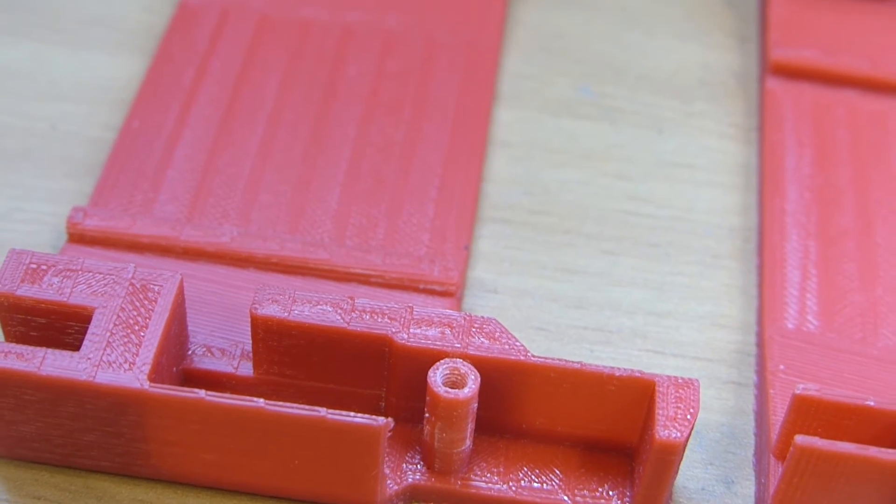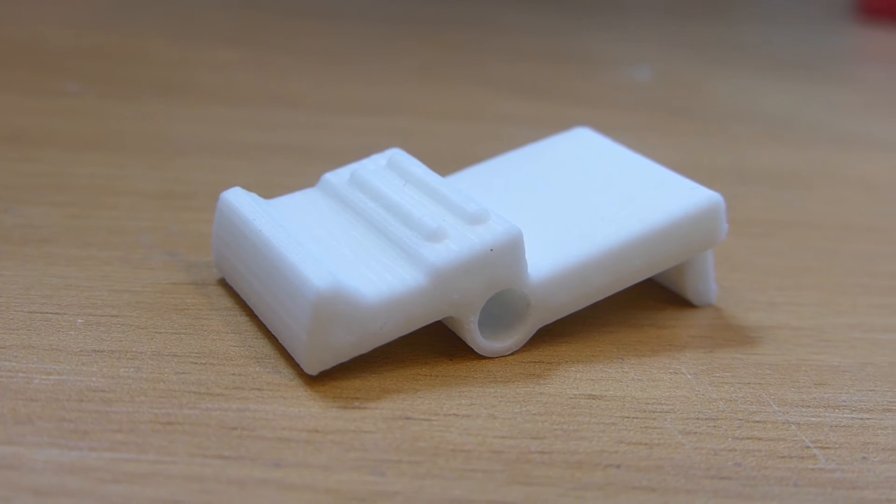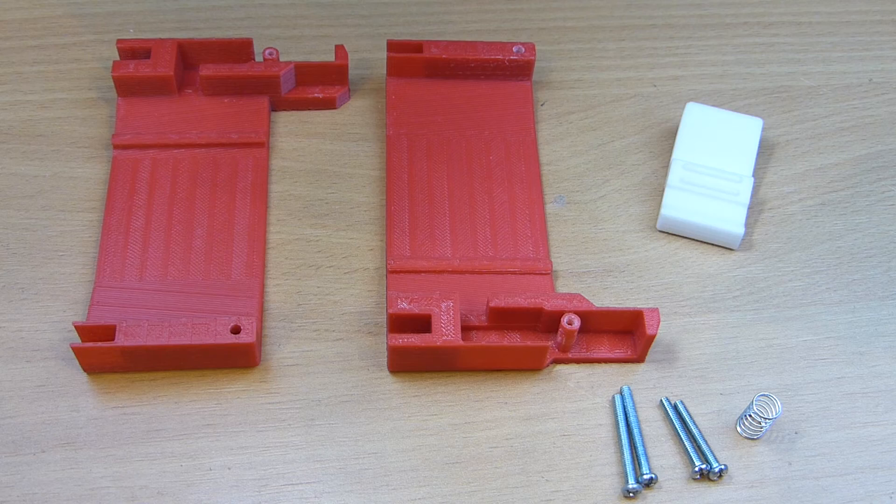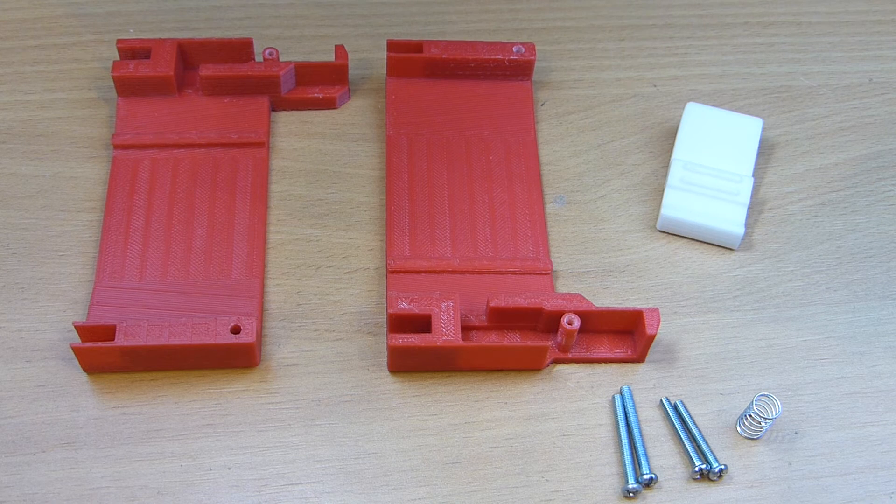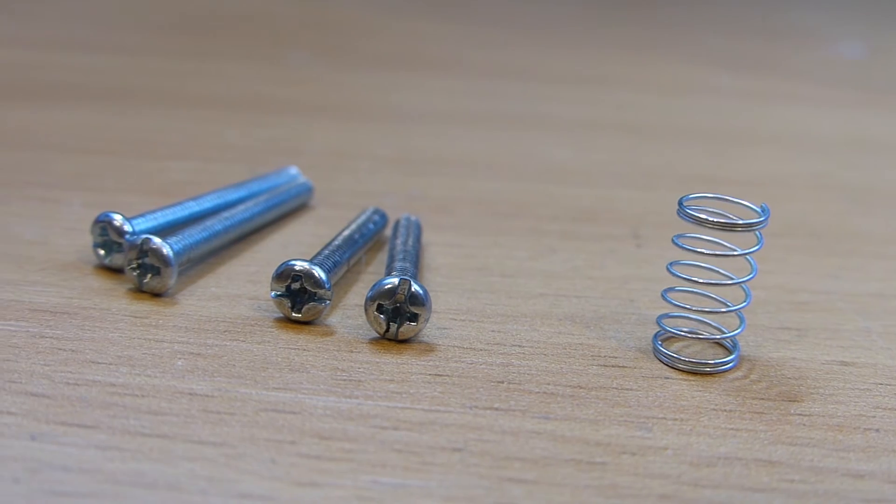Here are the 3D printed parts as they come off the printer bed. No supports or rafts are required for any of these parts. In addition to the 3D printed pieces, you will need a small spring and 4 M3 bolts to hold the halves together.